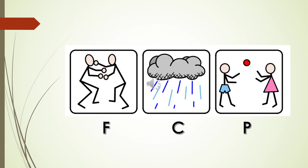These are some situations where you can be happy, sad, worried, angry, confused, or afraid. I am just showing three cases: FCP — Fighting, Clouds with rain, and Playing among two friends.